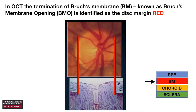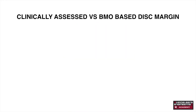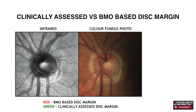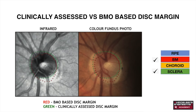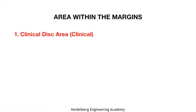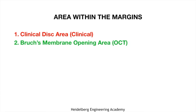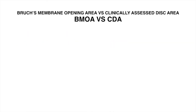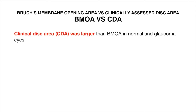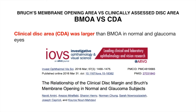So now we are left with two disc margins: the Bruch's membrane-based disc margin shown in red, and the clinically assessed disc margin shown in green. When there are two disc margins, we will have two areas within the margins: the clinical disc area and the Bruch's membrane opening area. It is well documented by Amini et al. that the clinical disc area is considerably larger than the Bruch's membrane opening area in both normal and glaucomatous eyes.